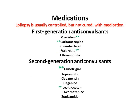Antiepileptic medications are generally classified into first-generation and second-generation anticonvulsants. First-generation anticonvulsants were discovered before 1990 and include: phenytoin, carbamazepine, phenobarbital, valproate or valproic acid, and ethosuximide. Second-generation anticonvulsants were invented after 1990 and include: lamotrigine, topiramate, gabapentin, tiagabine, levetiracetam, oxcarbazepine, and zonisamide. Epilepsy is usually controlled but not cured with these medications.